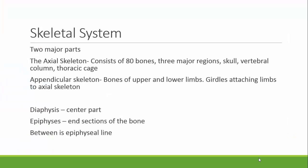The skeletal system has two major parts. The axial skeleton, which consists of around 80 bones, includes the regions of the skull, the vertebral column, and the thoracic cage. That's everything that's around your body organs in your center of mass.